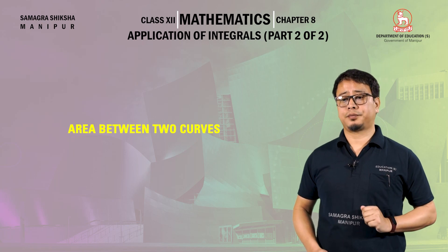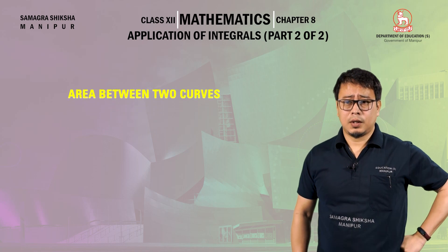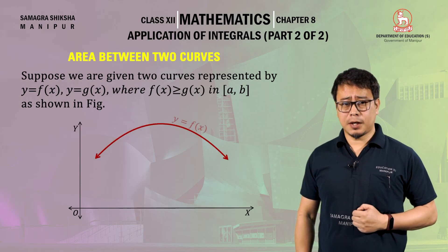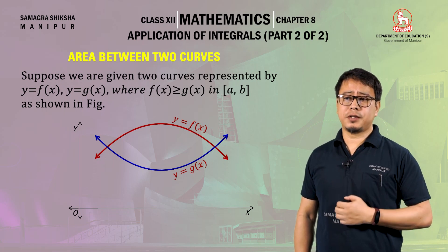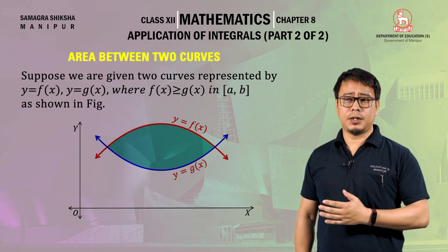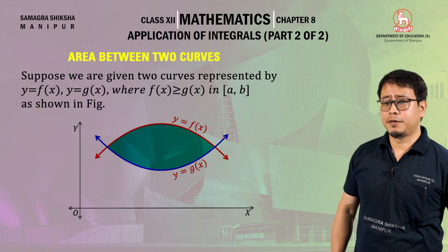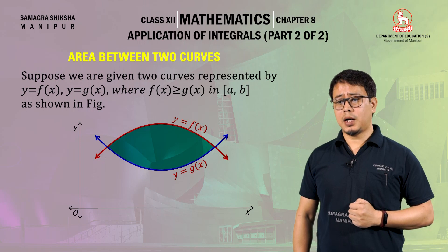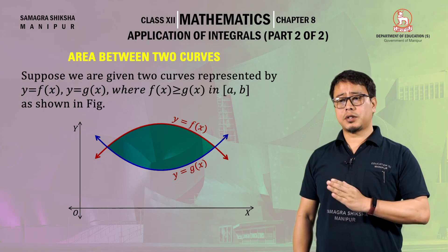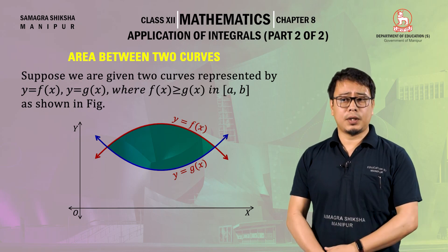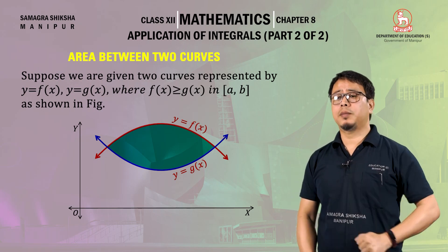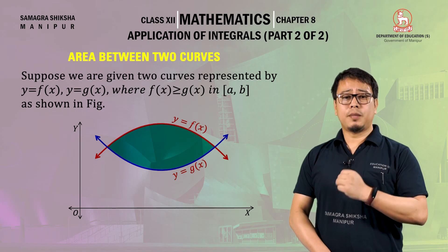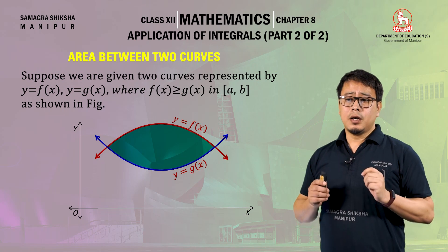Next: the area between two curves. Suppose we are given two curves y equal to f(x) and y equal to g(x), where f(x) is greater than or equal to g(x) in the given closed interval from a to b. As shown in the figure, the red curve represents y equal to f(x) and the green curve represents y equal to g(x), with f(x) above g(x) throughout the given interval.